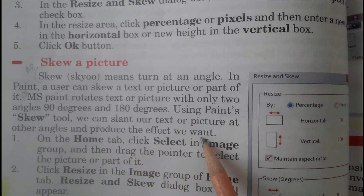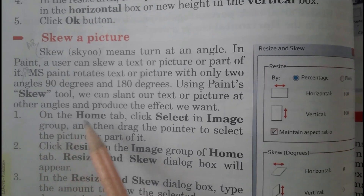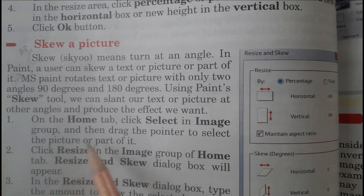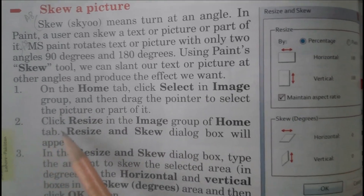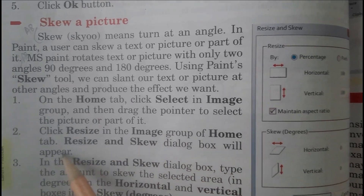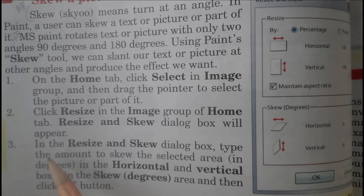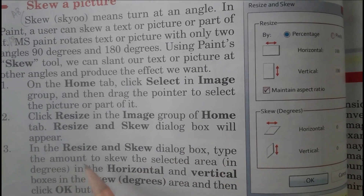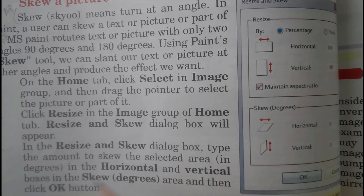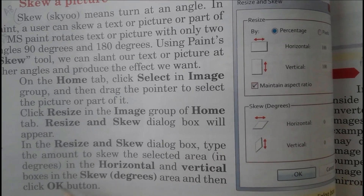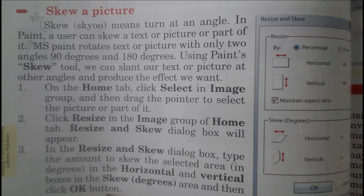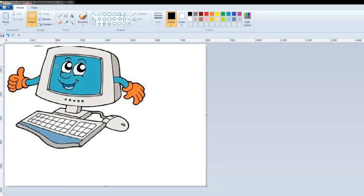Using Paint's skew tool, we can slant our text or picture at other angles and produce the effect we want. Step one: on the Home tab, click Select in the Image group, then drag the pointer to select the picture or part of it. Step two: click Resize in the Image group. The Resize and Skew dialog box will appear. Step three: type the amount of skew in degrees in the Horizontal and Vertical boxes in the Skew Degrees area, then click OK.